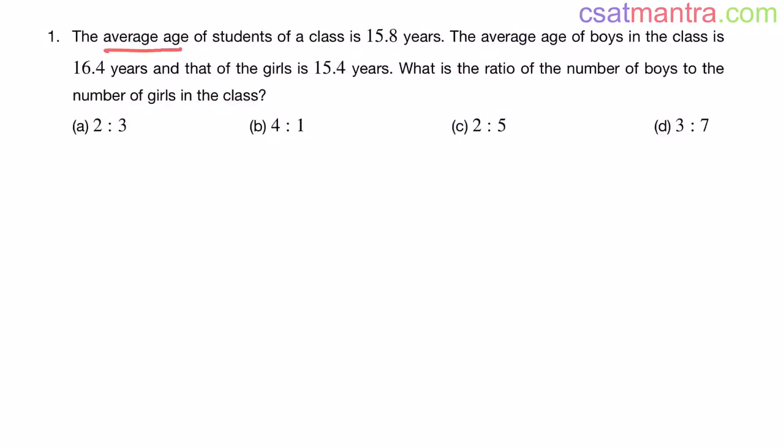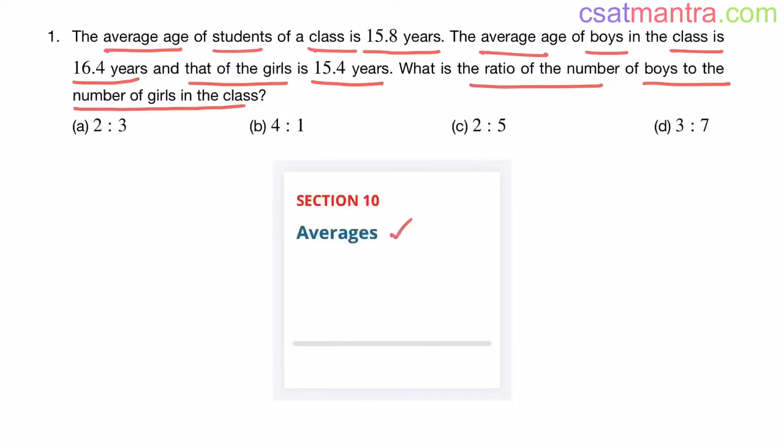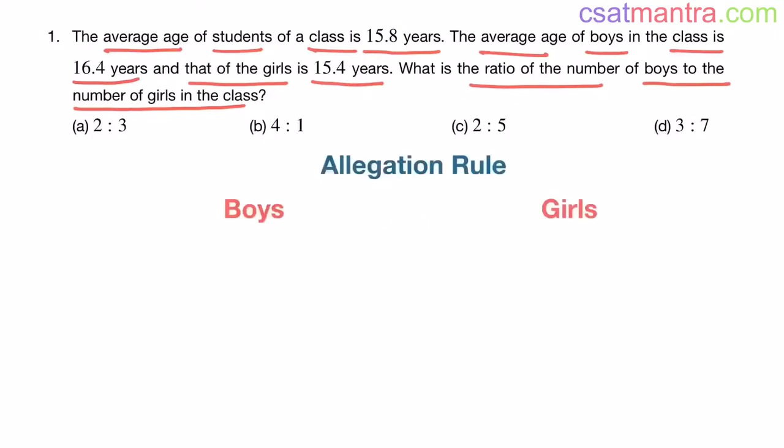The average age of students of a class is 15.8 years. The average age of boys in the class is 16.4 years, and that of the girls is 15.4 years. What is the ratio of the number of boys to the number of girls in the class? This question is based on averages. We will solve this problem using allegation rule first and then the averages formula which we learned in this chapter.